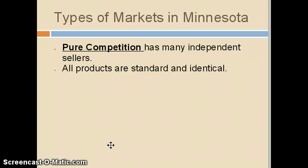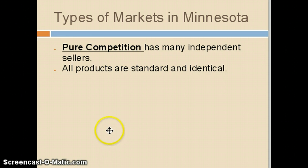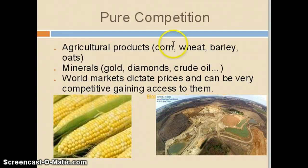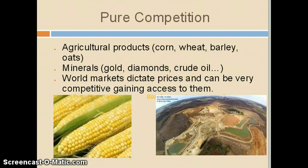The last type we're going to talk about is pure competition. In pure competition, there are many, many sellers of the products, and the products and services here are very standard — in fact, they're pretty much identical. Examples here would be agricultural products and minerals sold from one place to the next. So corn is corn and wheat is wheat, and you can't really differentiate them all that much.